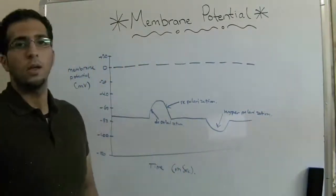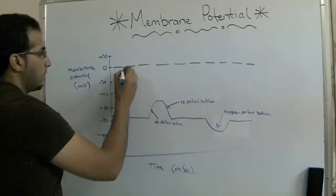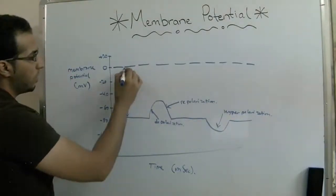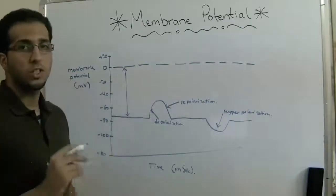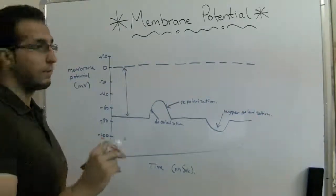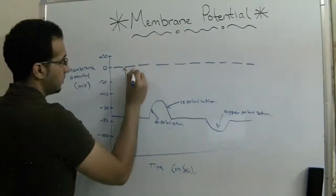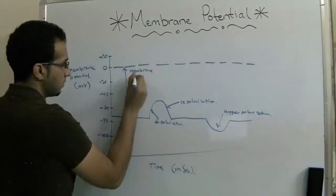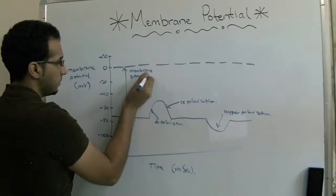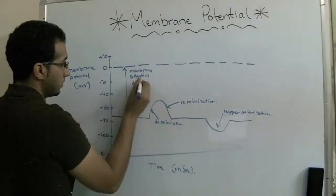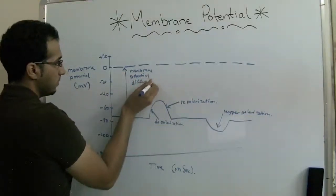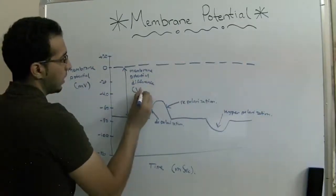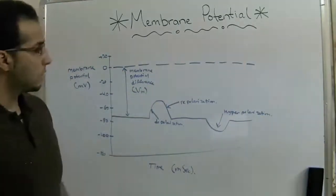Now this line over here from zero to the start is called the membrane potential difference, and it can be written like this.